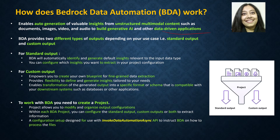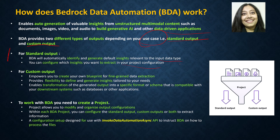By default, BDA provides two different types of outputs depending on your use case. The first is a standard output, and the second is the custom output. Standard output is out of the box — BDA will automatically identify and generate default insights relevant to the input data type. You can configure which insights you want to extract and have them persisted in your project configuration. Behind the scenes, BDA has a default inbuilt blueprint that it uses to generate these default insights. You can pick and choose what information you want to capture, and that's the standard out-of-the-box output.